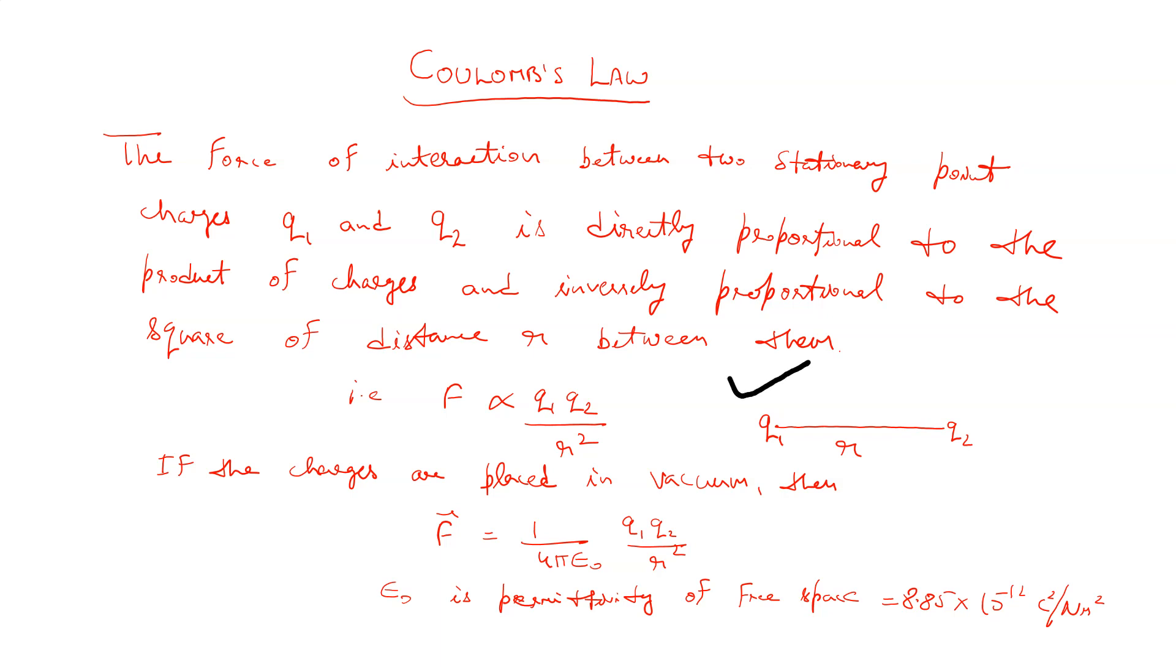Two stationary point charges. Suppose there are two point charges q1 and q2. The force of interaction between these two stationary point charges is directly proportional to the product of charges and inversely proportional to the square of distance r between them. That is, F is proportional to q1 q2 divided by r square. This is known as Coulomb's law.